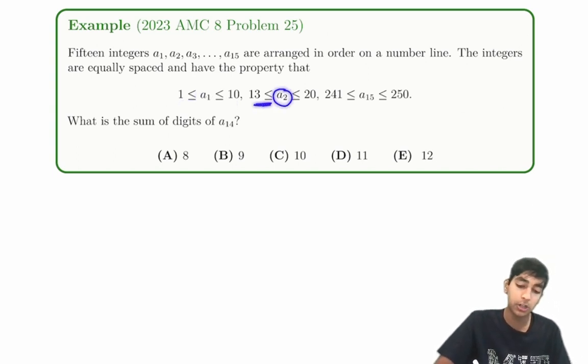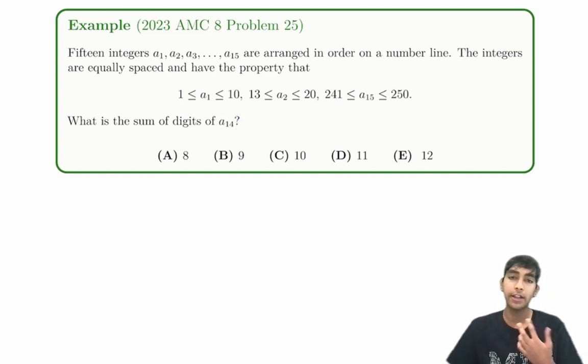The integers are equally spaced, so the gap between a1, a2, a3 are all the same. We are also given that a1 is greater than or equal to 1 but less than or equal to 10, a2 is greater than or equal to 13 and less than or equal to 20, and a15 is greater than or equal to 241 and less than or equal to 250. What is the sum of digits of a14?